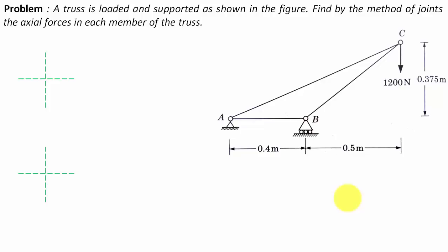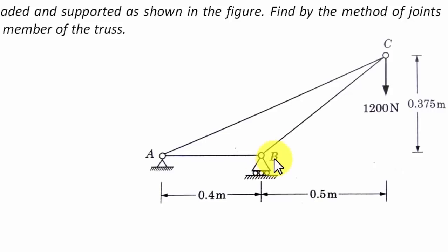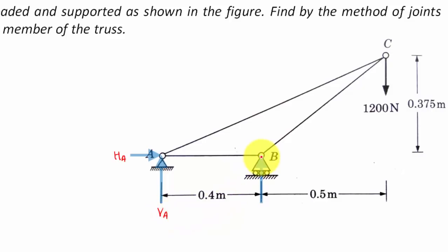Whenever you're solving problems based on truss, try to find the reactions at supports. You can clearly see there is a hinged support at A and a roller support at B. At the hinge support you're going to have two forces — HA and VA. When you speak of the roller support, it's going to offer a reaction perpendicular to the surface, normal to this surface. Let us call that reaction RB.